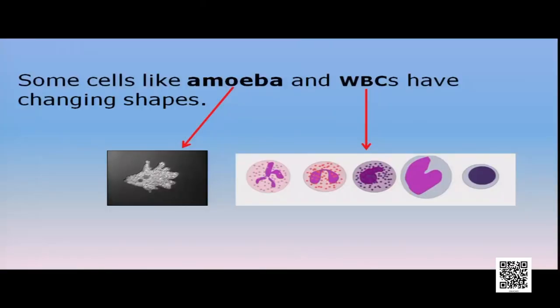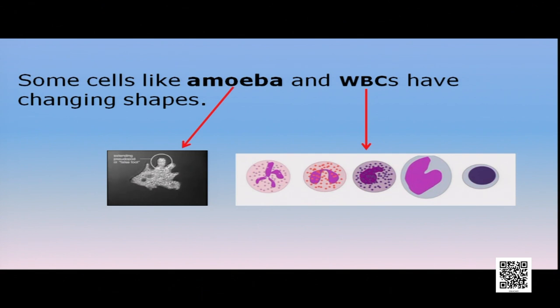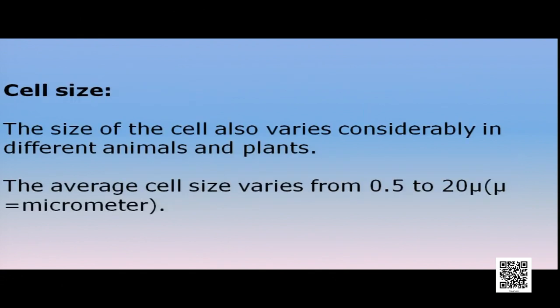Some cells do not have a fixed shape — cells like amoeba and WBC (white blood cells) have an irregular shape that varies as per their need.